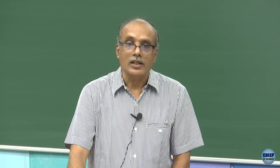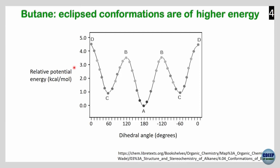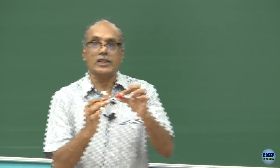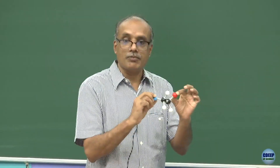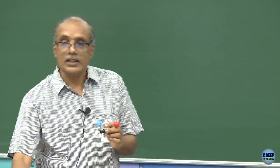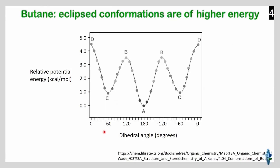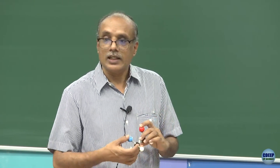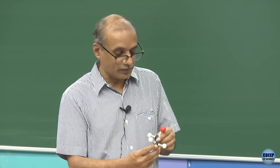This is something many of you will be familiar with — this is for butane. I have a model here. If I assume that the red sphere and the blue sphere are methyl groups, then we have methyl-CH2-CH2-methyl — that is butane. The dihedral angle can be anywhere from 0 to plus or minus 180 degrees, a total 360-degree rotation. We identify two main conformations: one is the staggered.